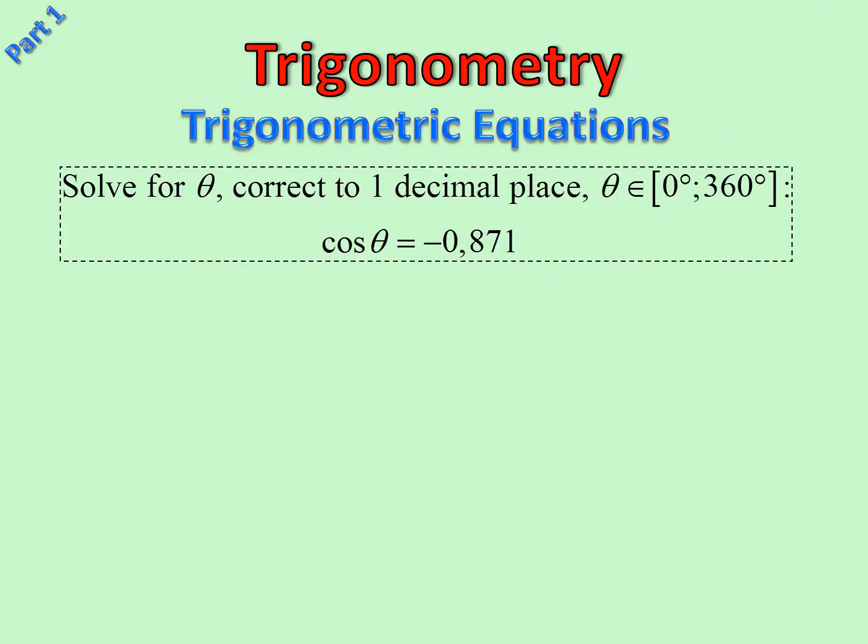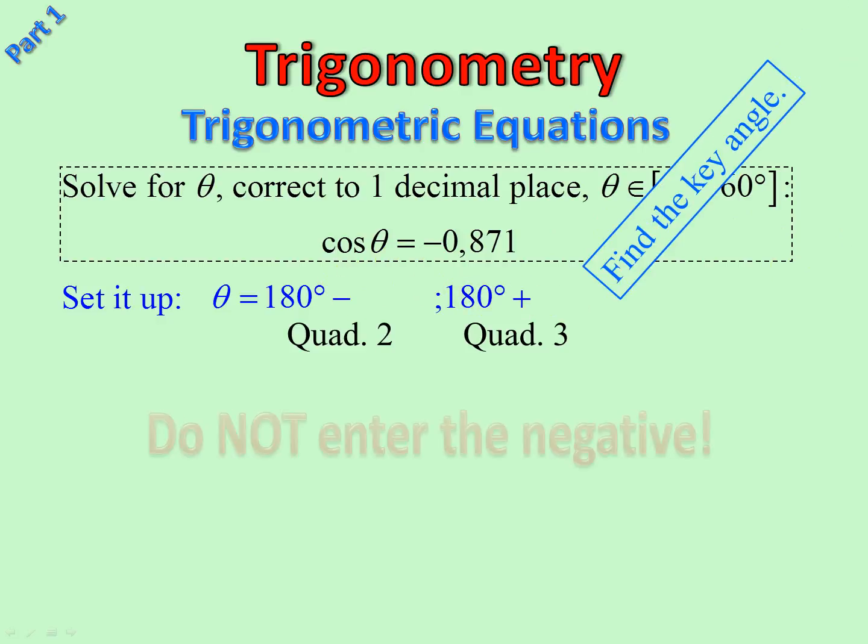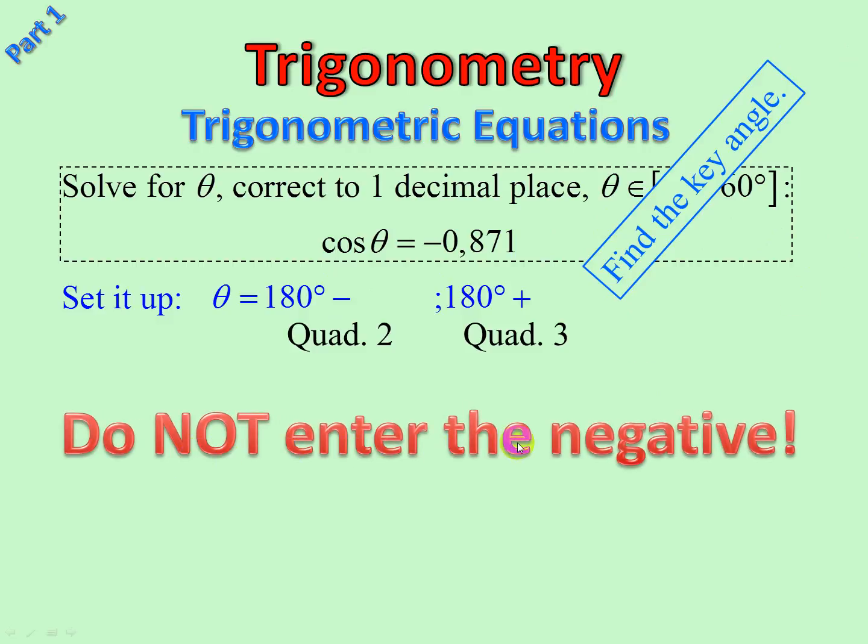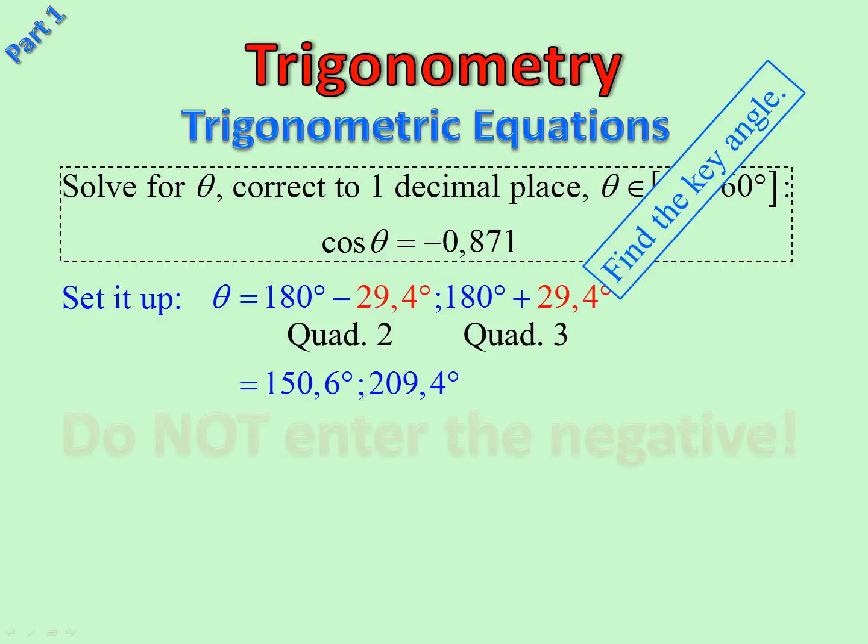Another one. Step one: set it up. We say, where is cos negative? Ah, second and third. There we are. So 180° minus for second, 180° plus for third. Now I'm going to find the key angle. Once again, the warning: do not enter the negative. Because we've used the negative to tell us this. We just want the key angle now. There we are, and there's our answer.